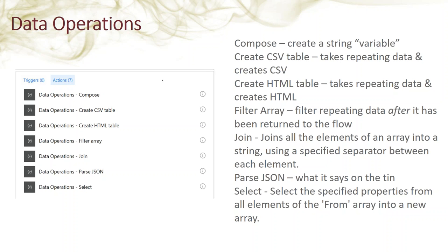Compose creates a string you can reuse. Create CSV table and create HTML table are pretty descriptive — you can take list data or SQL data and create a CSV or an HTML table from it. Right now you cannot choose which columns to include — it will return everything in your default view with internal column names as headers. It's functional, just not the most beautiful. I've read that column selection is planned for a future update.